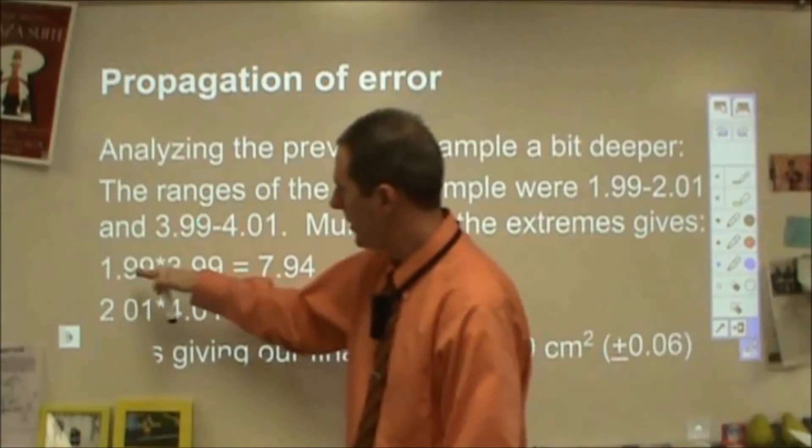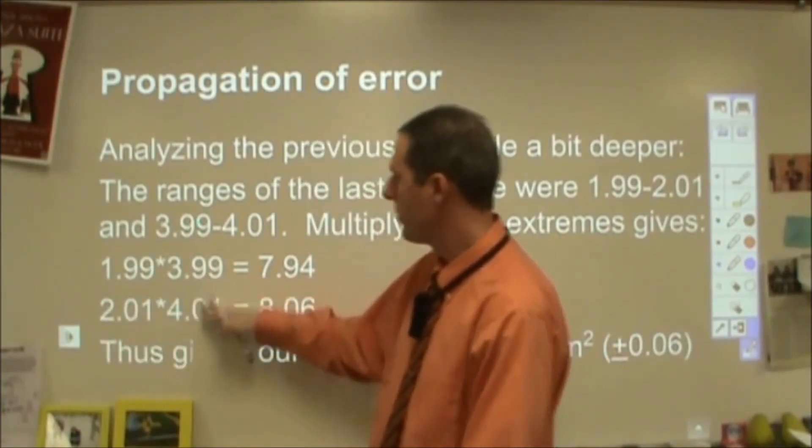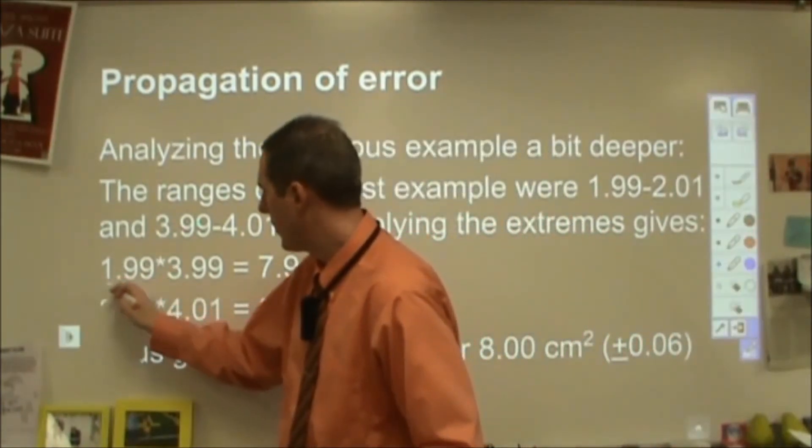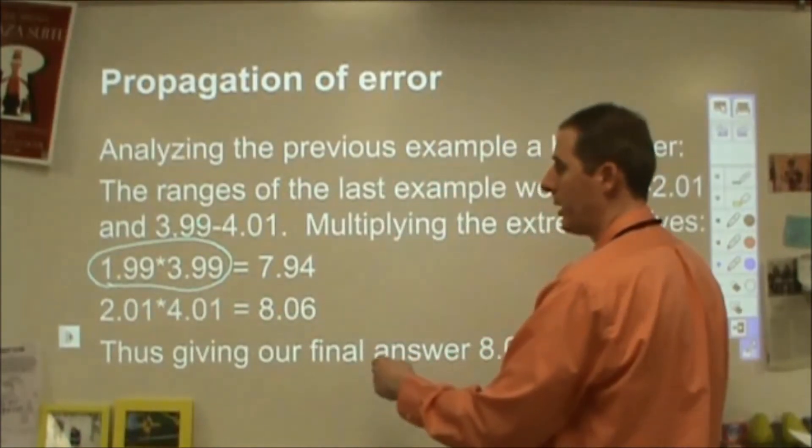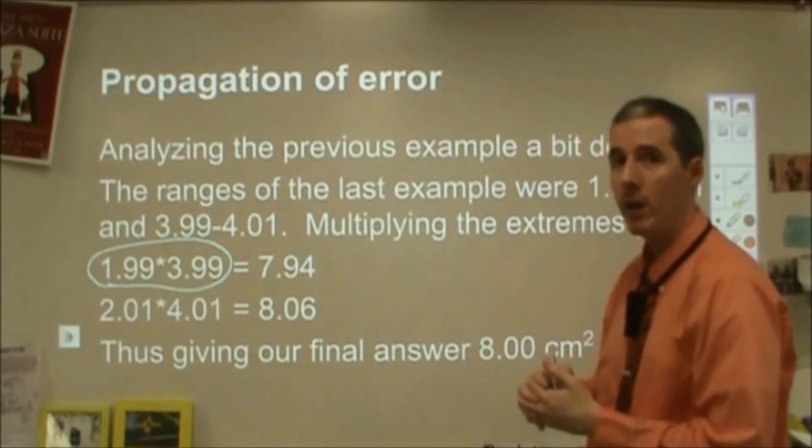So my range was 2.00 (±0.01) and 4.00 (±0.01). So the smallest values I can get on that are 0.01 below and 0.01 below. If I have the smallest two values and I multiply them, that ends up being 7.94.